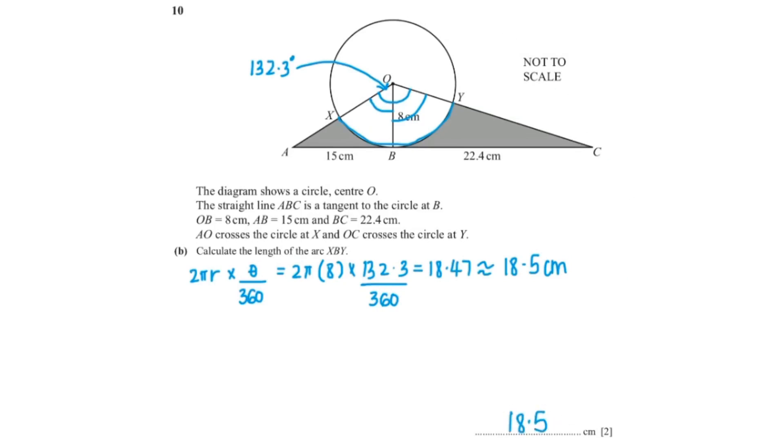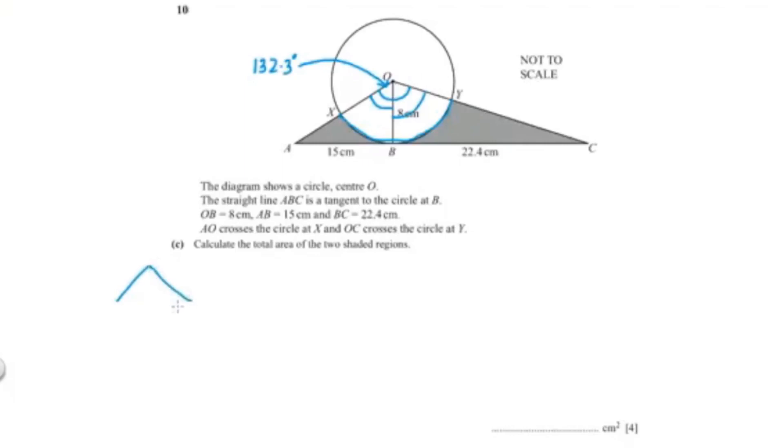Now let's look at the last question and they're asking us to calculate the area of the shaded region. So to find the area of the shaded region we would have to minus the sector from the triangle.